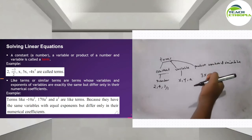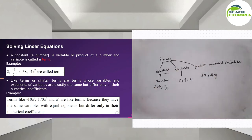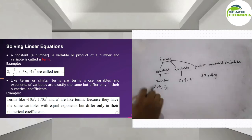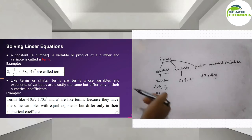So a term can be a constant, or a product of a number and a variable, or a product of a number and a variable. A constant or such a product is called a term. We say terms — and we also have like terms and similar terms.